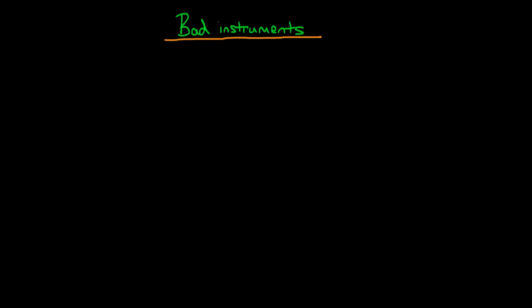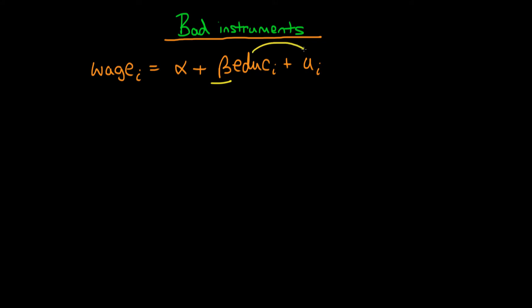In this video I want to provide an example of a bad instrument. The example we're going to think about is our familiar case where we are trying to decipher the effect which the number of years of education has on an individual's level of wage. The problem with estimating beta here — the return on education via OLS — is that education is likely correlated with a number of omitted factors contained within the population error UI.